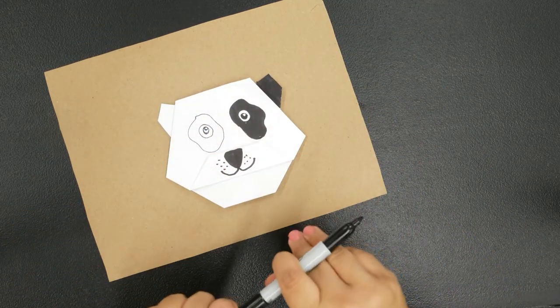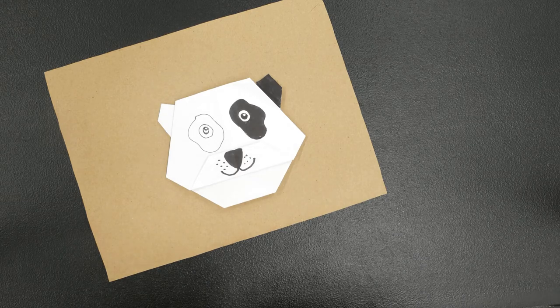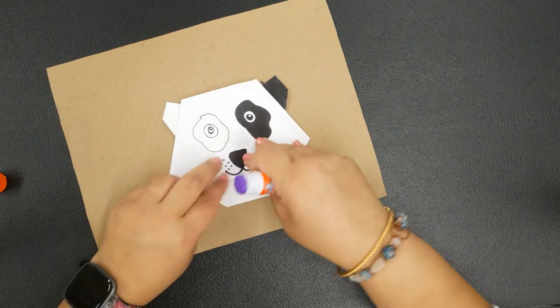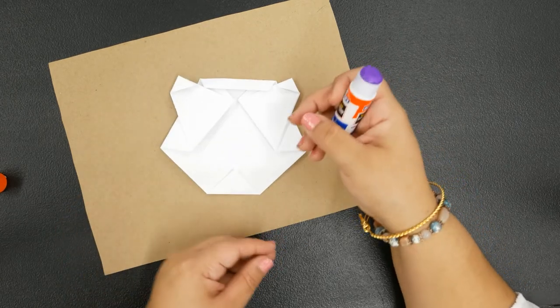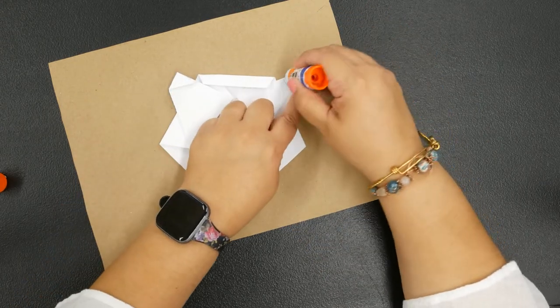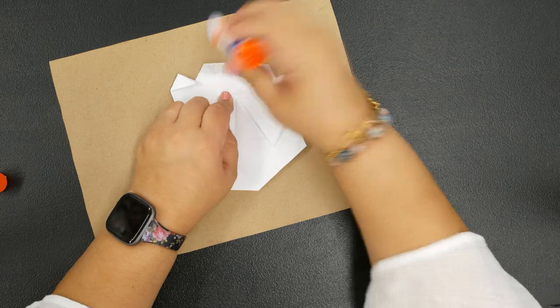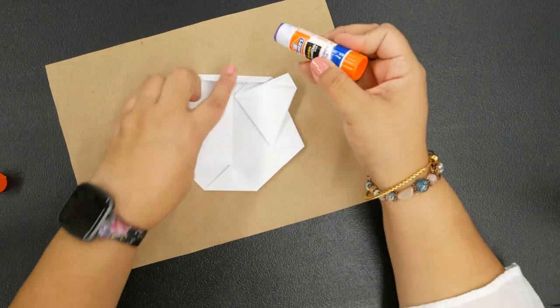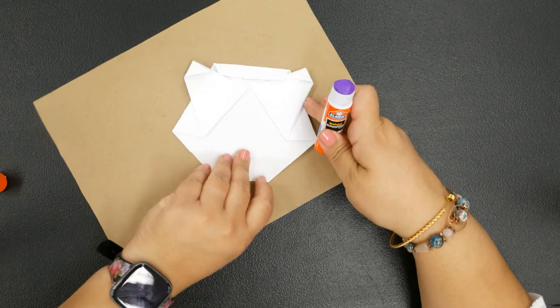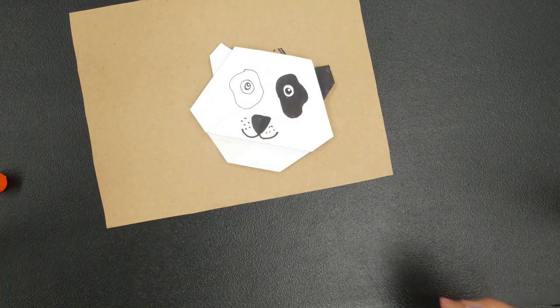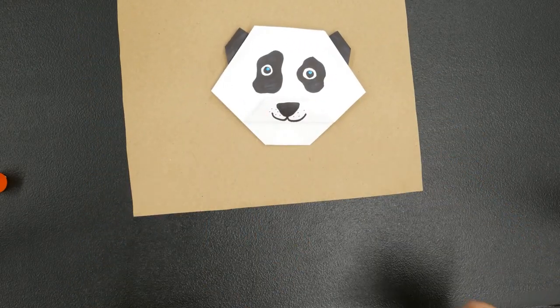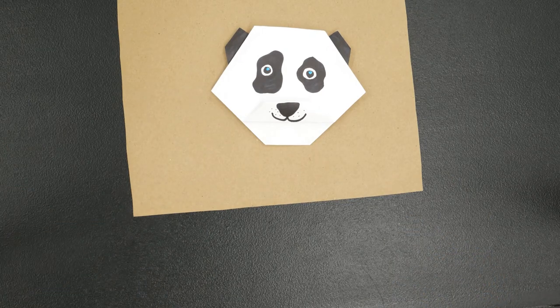Now once you're done coloring your panda bear, we're going to bring out our glue and all the creases that we created, you're just going to go through them and just glue them all into place. I'm going to flip it over and all of our little foldings here, just add a dab of glue and we're just going to glue everything into place here. And there you go guys, there is your origami panda bear.